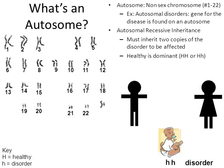In autosomal recessive, healthy is dominant. I like to use H's in my Punnett squares — whatever letters you use, they must be capitalized if we're talking about the healthy allele in an autosomal recessive scenario. That means the disease, whatever it is, is recessive.